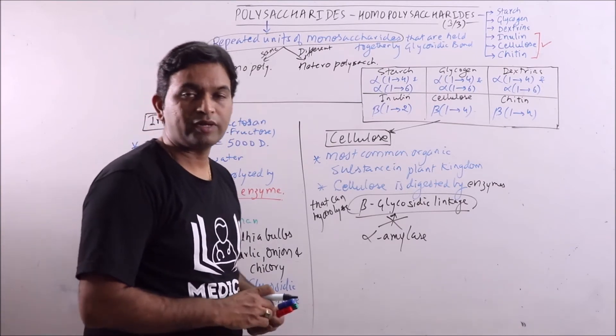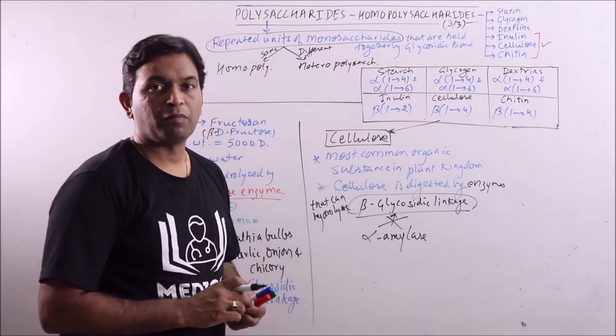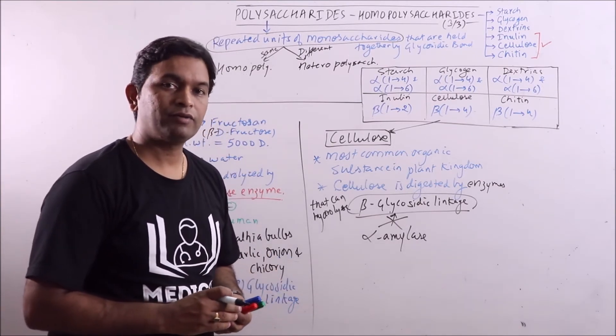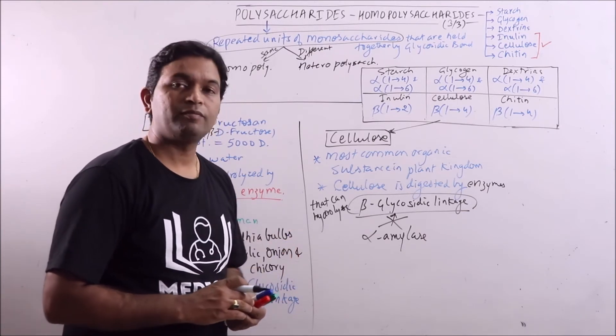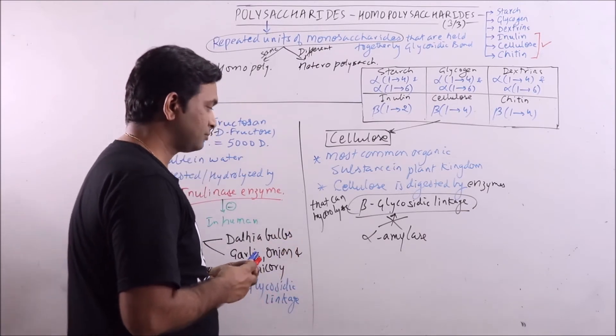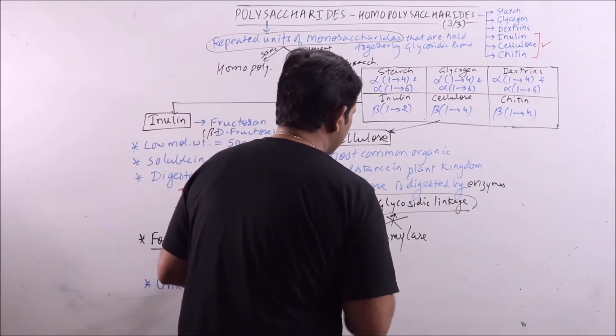But in certain ruminants and herbivores, microorganisms are found in their gut which can produce such enzymes which can hydrolyze the beta-glycosidic linkage. Now, what is the structure?